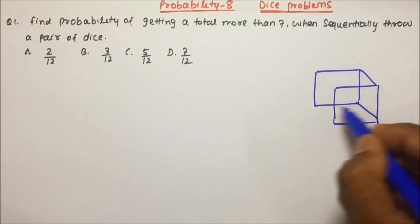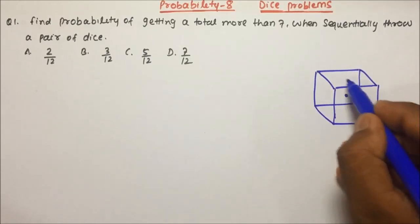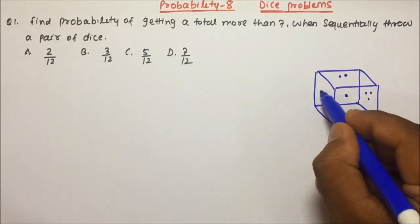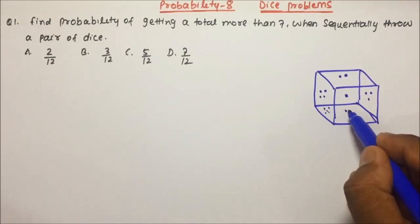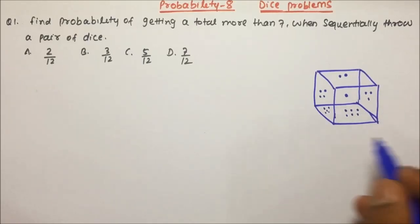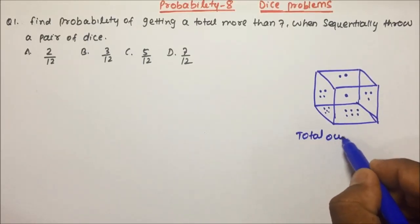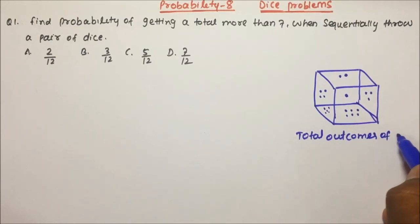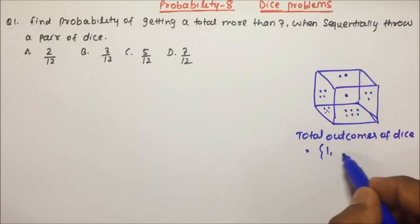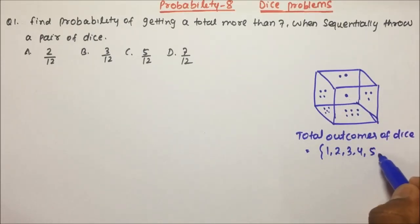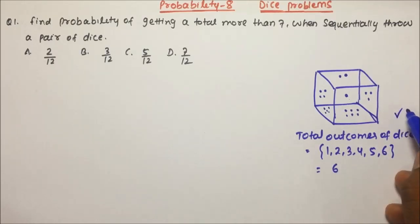So this is your dice, and on a dice 1 will be there, 2 will be there, 3, 4, 5, and then 6. So if we talk about the total outcomes of a dice, total outcomes will be 1, 2, 3, 4, 5, 6. So total outcomes will be 6 when we throw 1 dice.